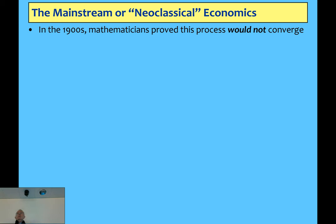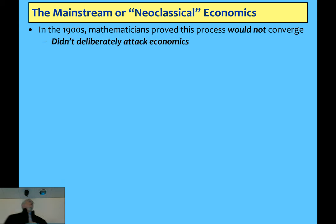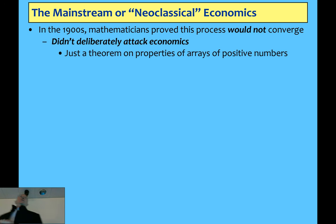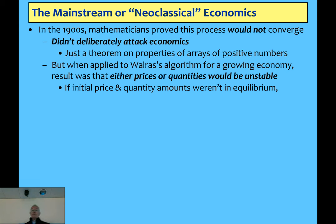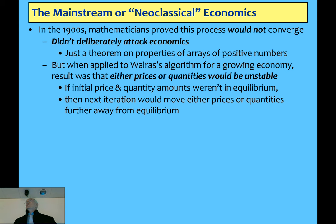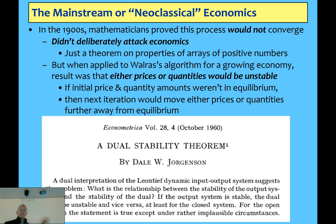It wasn't economists who solved this — it was mathematicians, and they didn't do it deliberately. It was simply a mathematical theorem about the properties of a square array of numbers when they're all equal to or greater than zero. It's called the Perron-Frobenius theorem. When that was applied to Walras's mechanism, it actually meant either prices or quantities would be unstable. You'd get prices converging but quantities moving away, or vice versa — you could not get both. So if the initial levels weren't in equilibrium, the process would never get you to equilibrium. You couldn't reach equilibrium from a position of disequilibrium. This was first revealed in economics in the early 1960s, though the mathematics was worked out in the 1910s and 1920s.